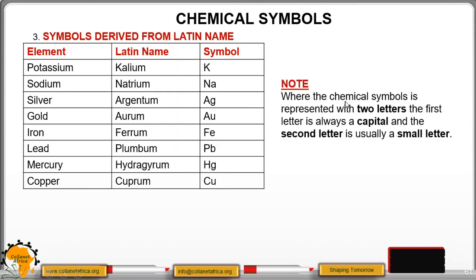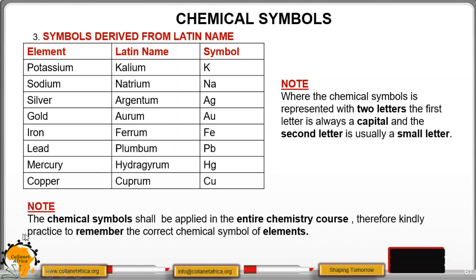Note, where chemical symbols is represented with two letters, the first letter is always a capital and the second letter is usually a small letter. The chemical symbols shall be applied in the entire chemistry course. Therefore, kindly practice to remember the correct chemical symbol of elements.